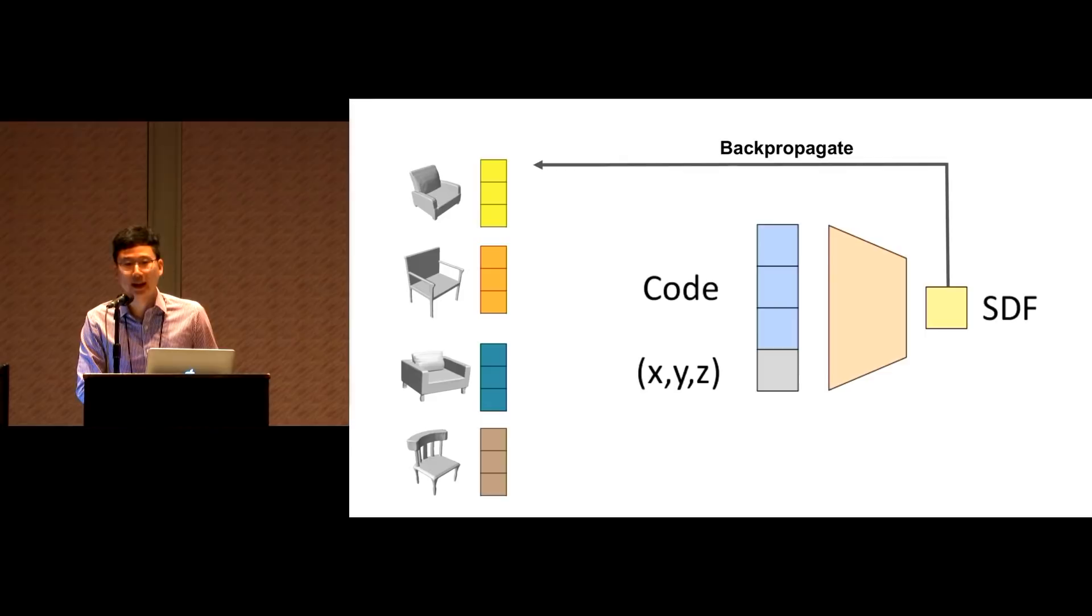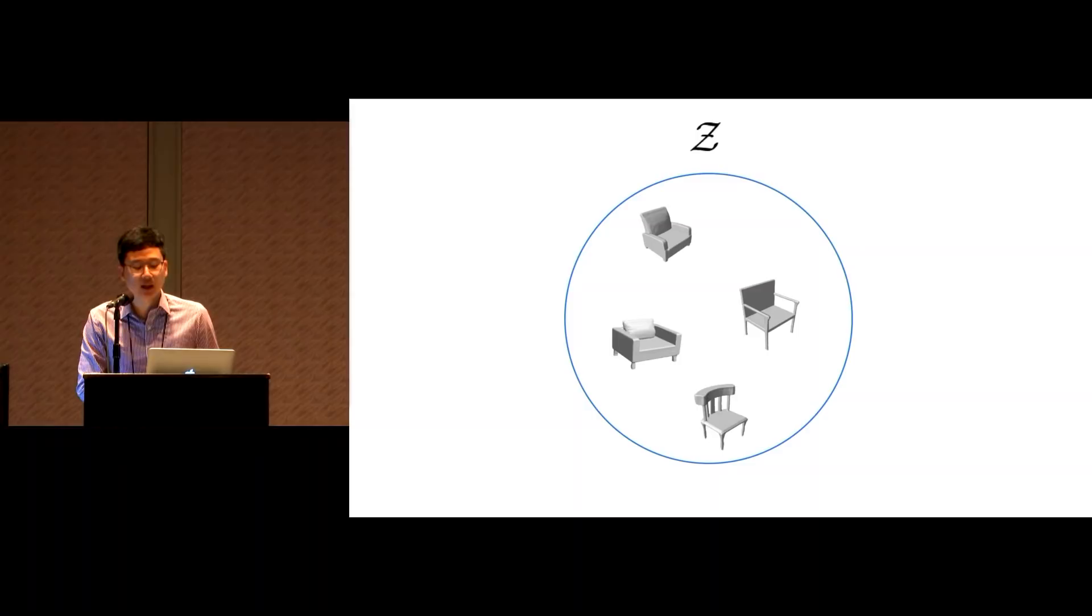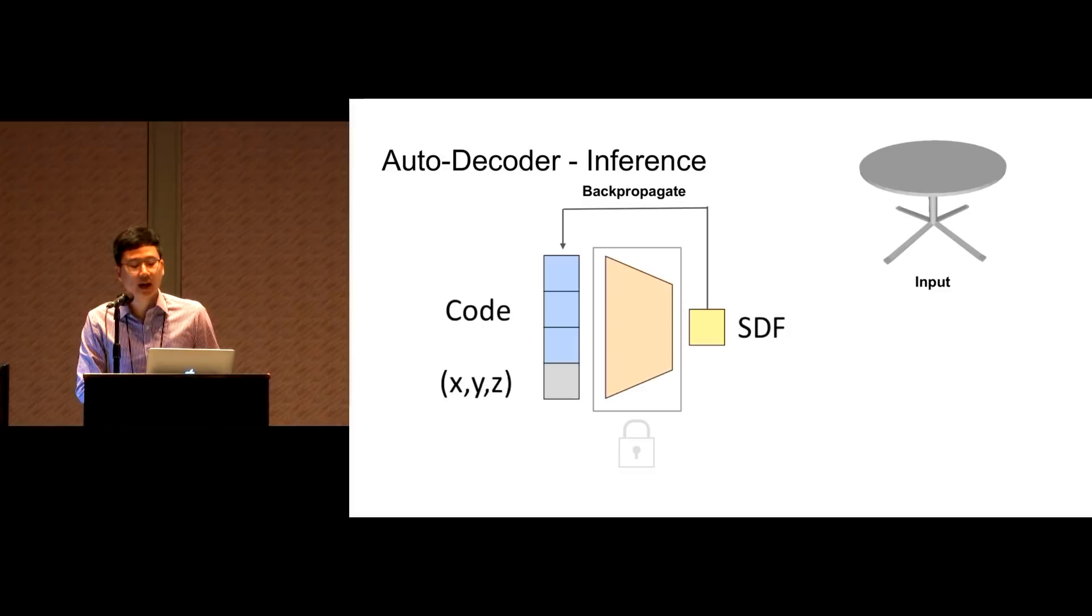And to avoid designing an encoder, we introduce a learning scheme that we call auto-decoder, where the code is directly optimized through backpropagation. During training, we randomly initialize a code for each training shape. The code is then attached to an XYZ input, and given the ground-truth SDFs, we can jointly optimize for all individual codes and the decoder weights. After training, we have a latent space of high-quality shapes.